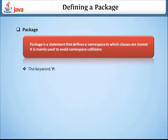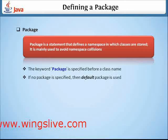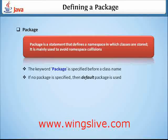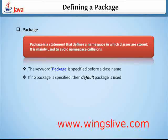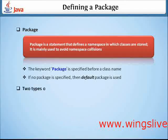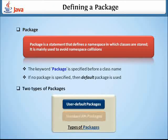The keyword package is specified before defining a class name. If no package is specified, a default package is used automatically. In Java, there are two types of packages available: user-defined packages and standard API packages.